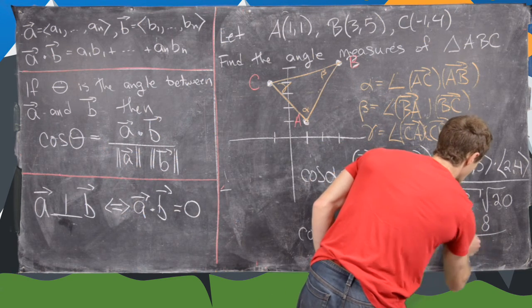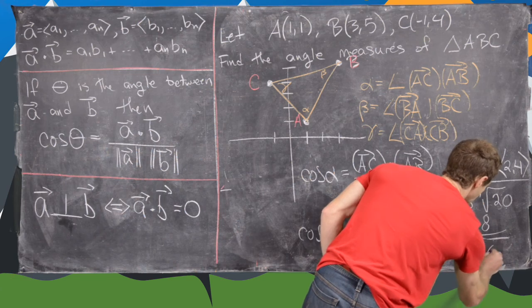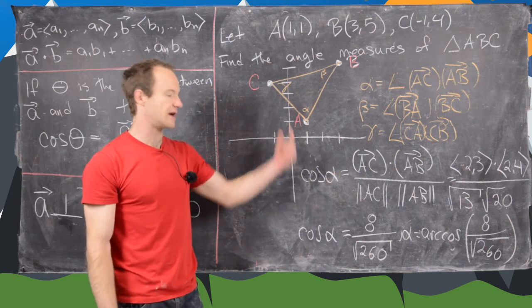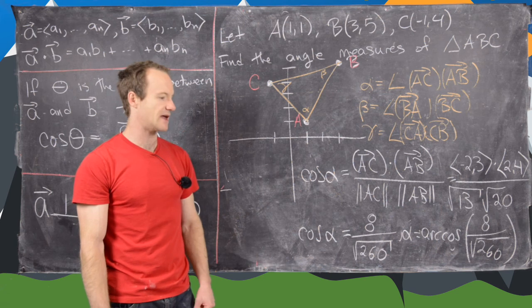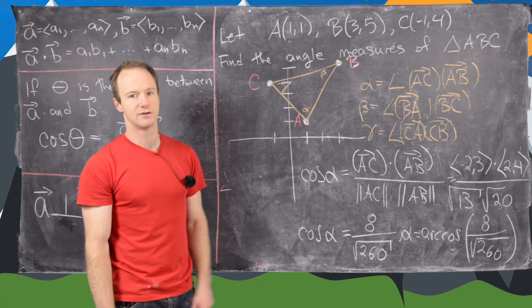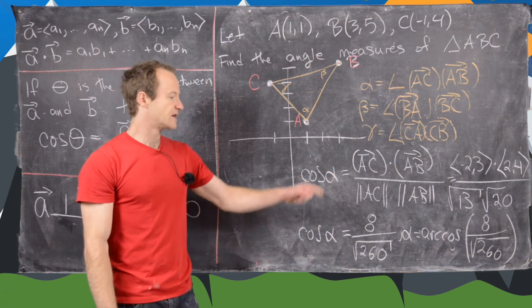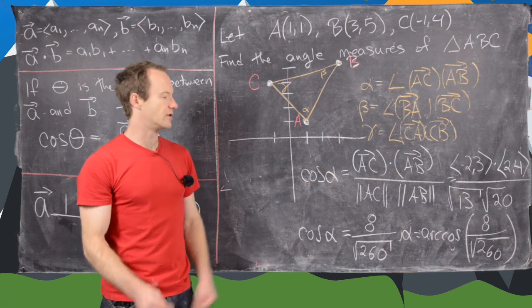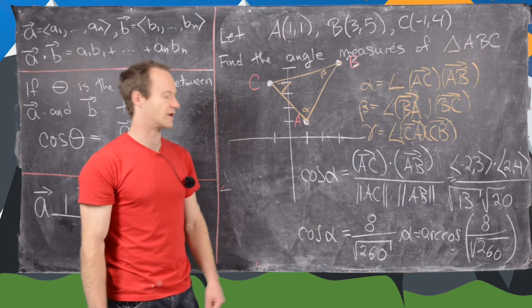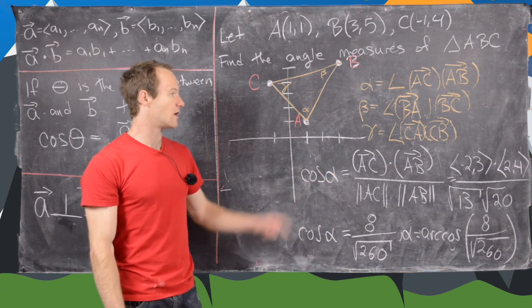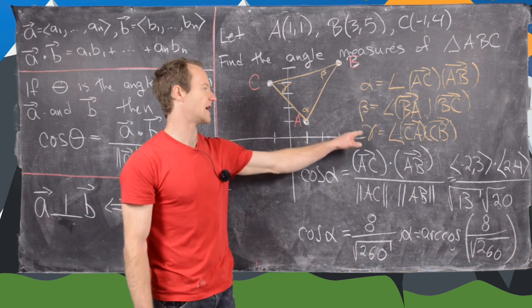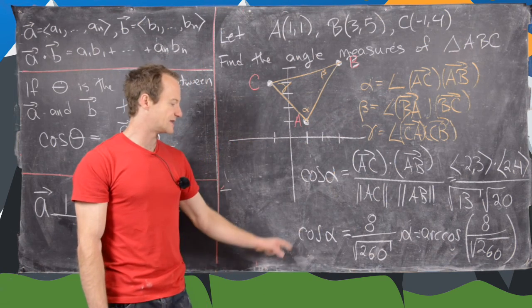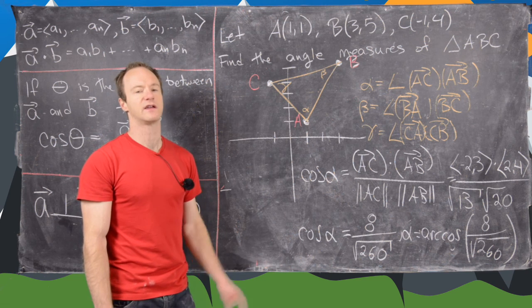So we have 8 over the square root of 260, and we're going to want to take a quantity between 0 and pi, or 0 and 180 degrees. So I won't calculate that out in numbers, but notice that you could just plug it into a calculator or something and get that very quickly. And also, I won't calculate beta or gamma, because they follow exactly equivalently to this strategy.